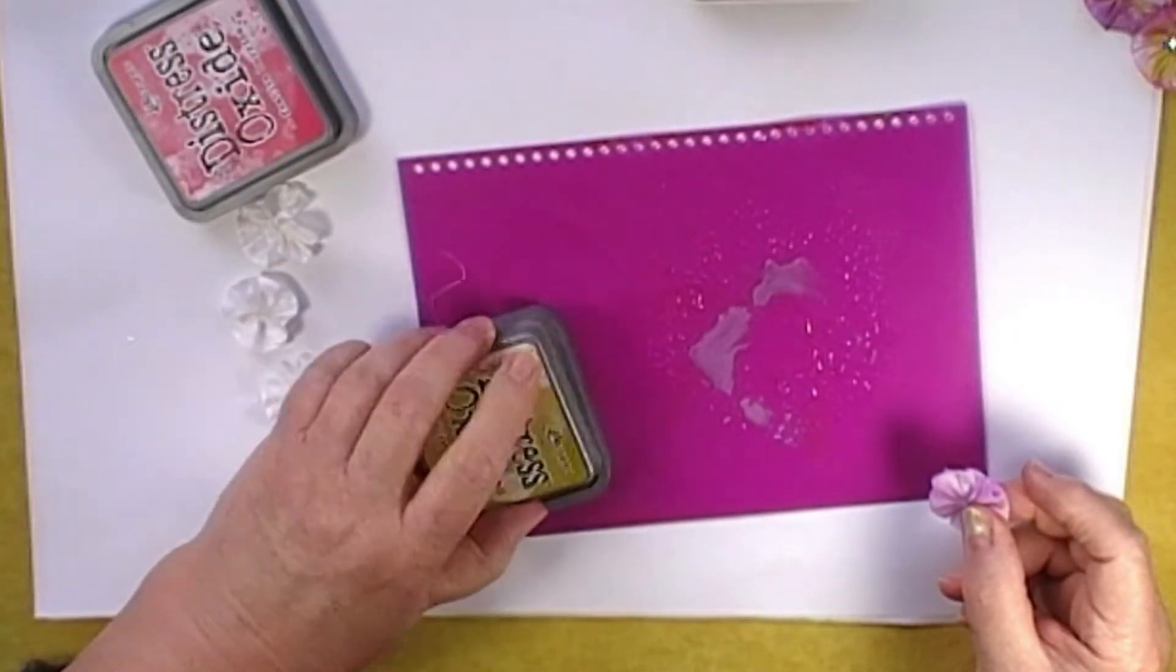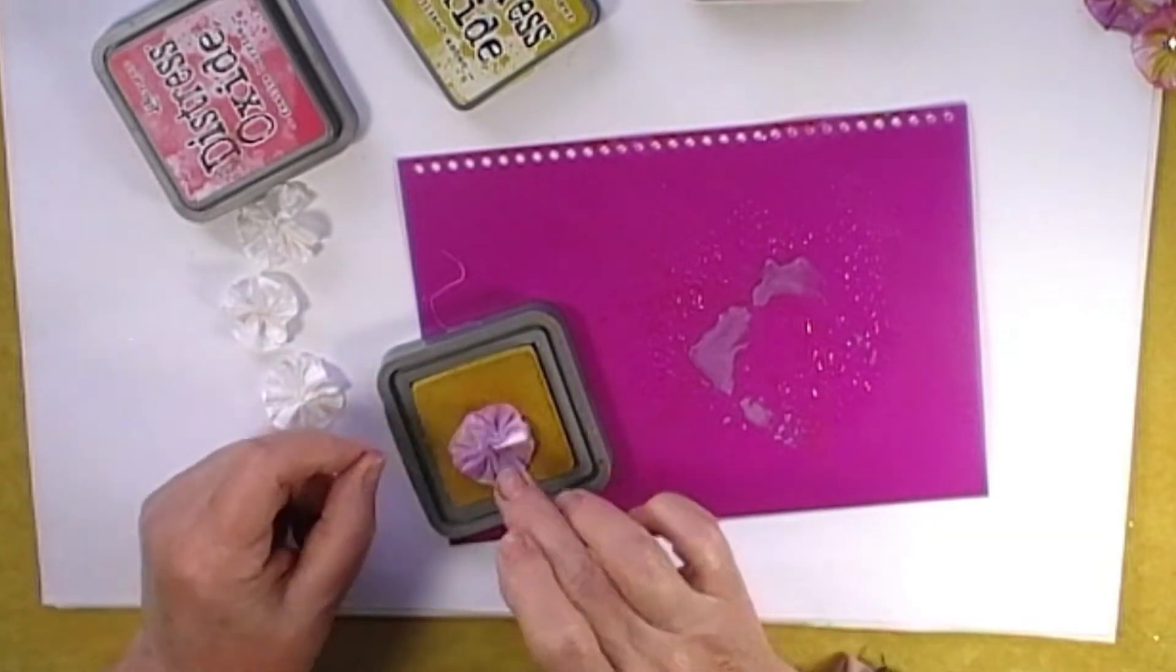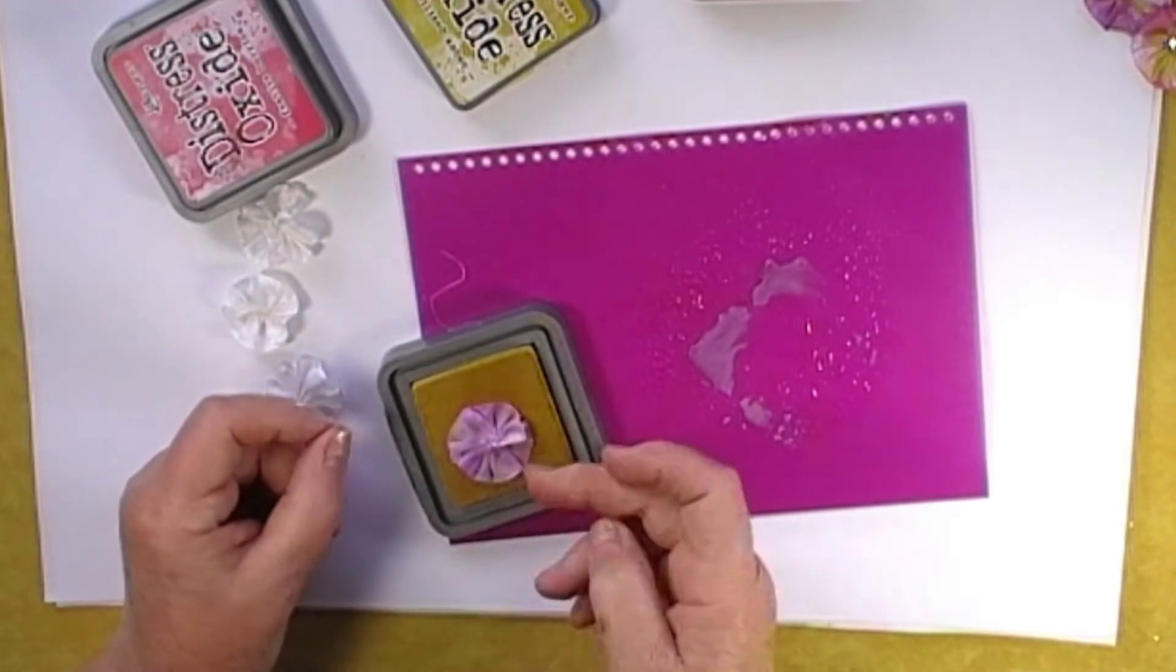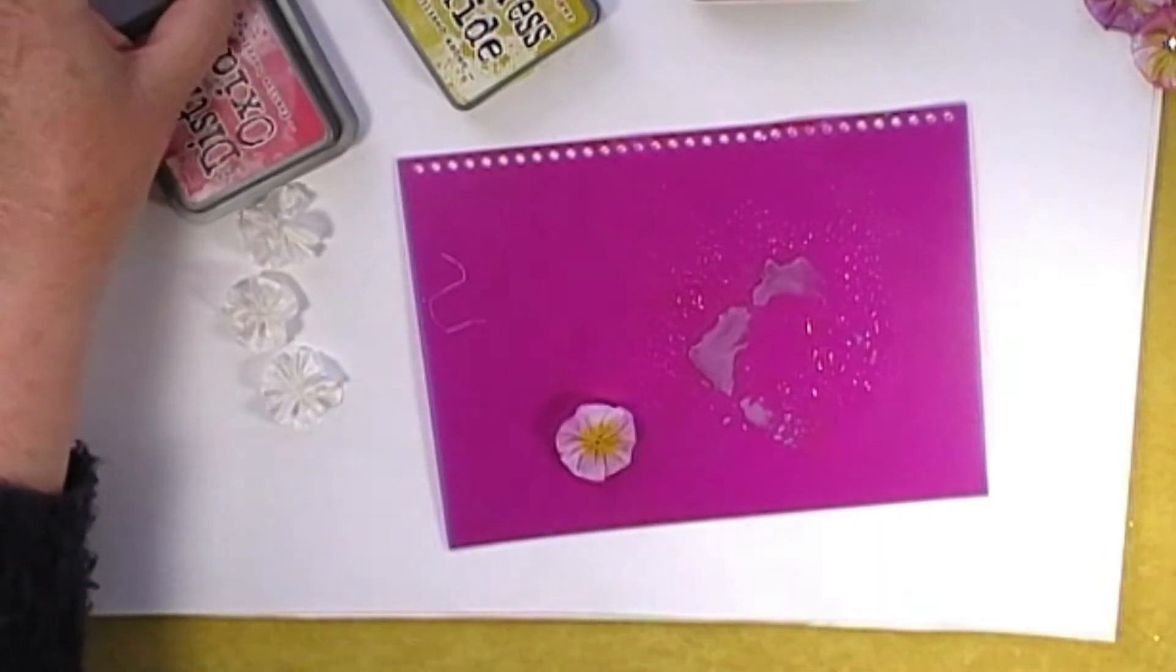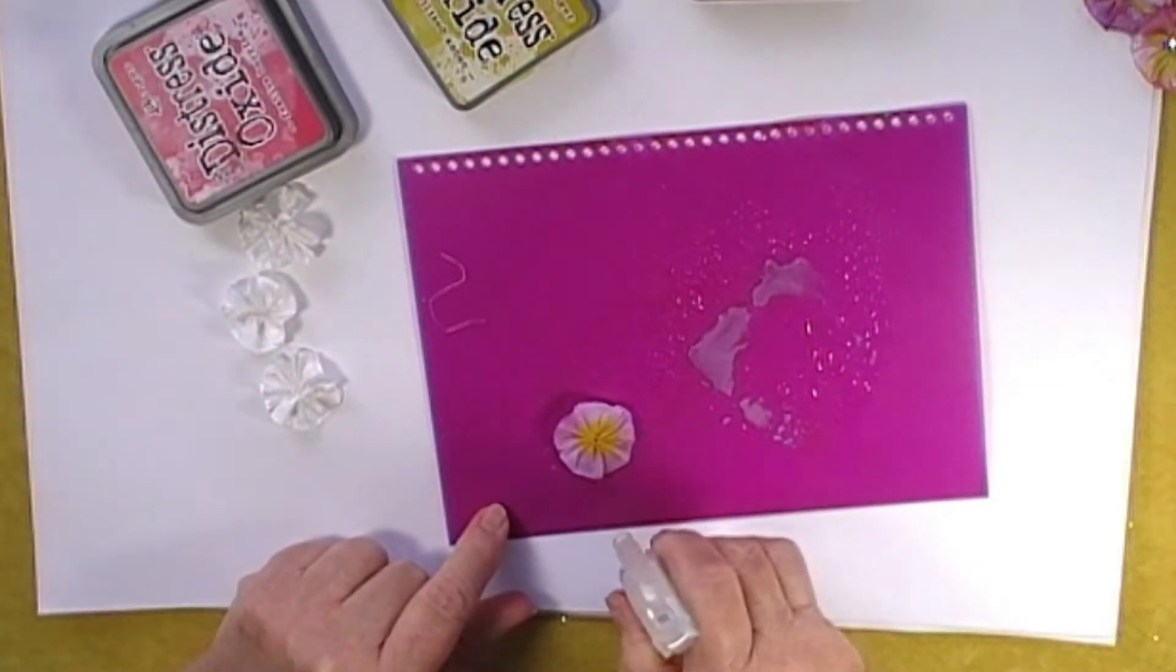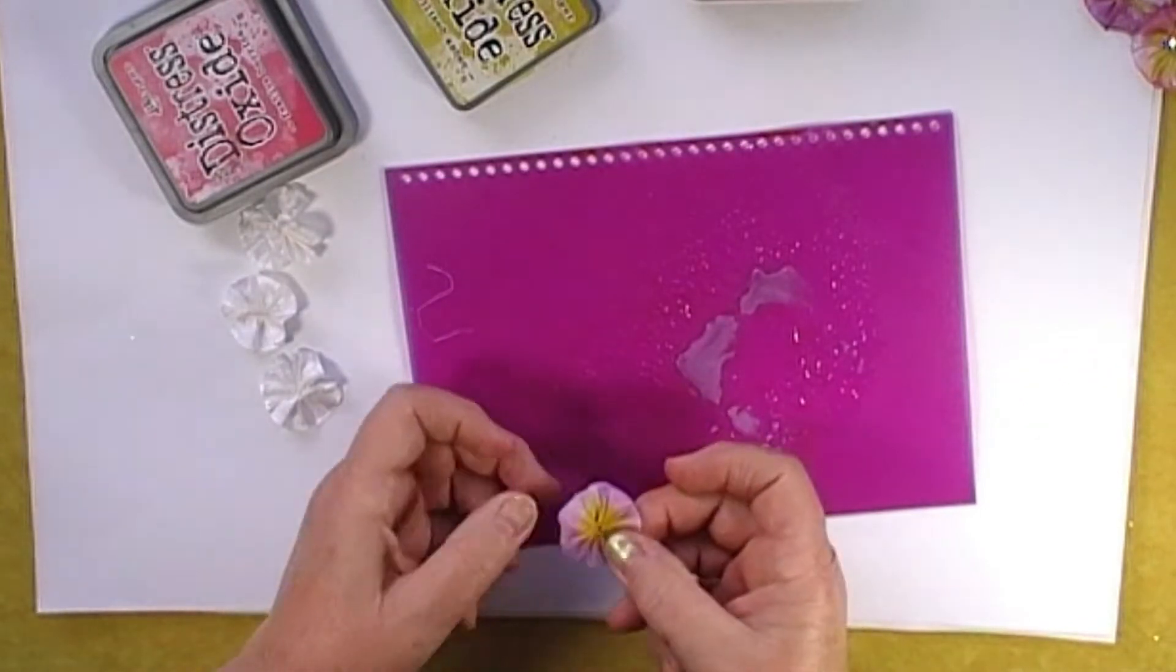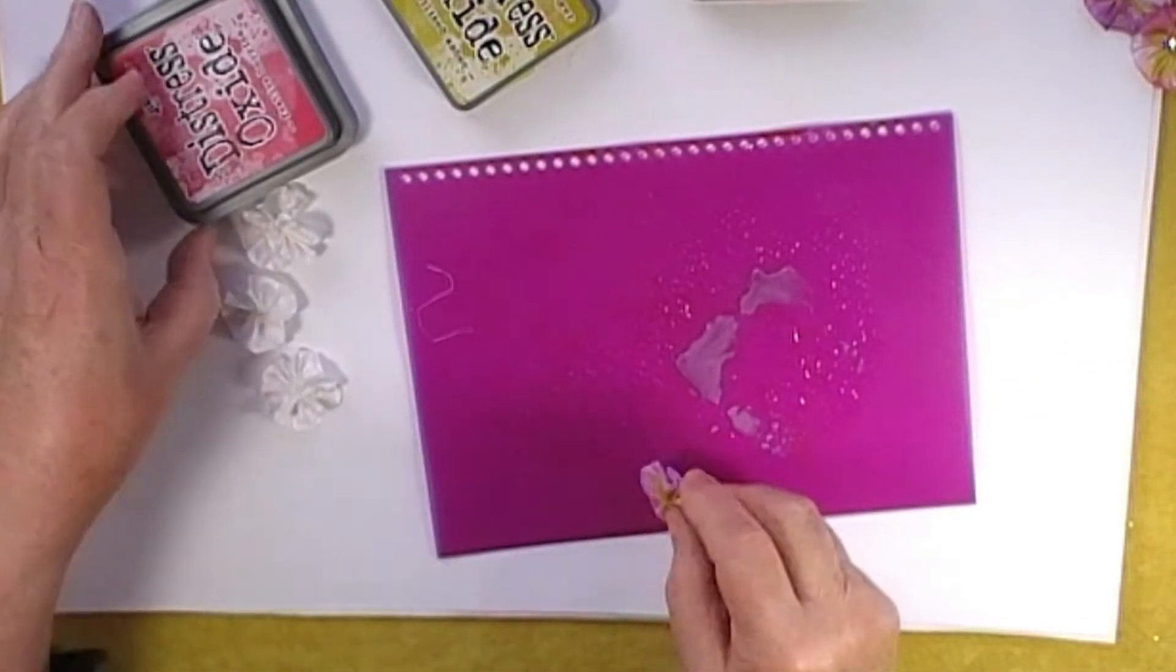And then we're going to take another color. I like to have them yellow in the middle. So I've got my yellow here and I'm just going to put that directly on the pad and press on the middle with my finger so I get a bit of yellow. And then give it another spray.